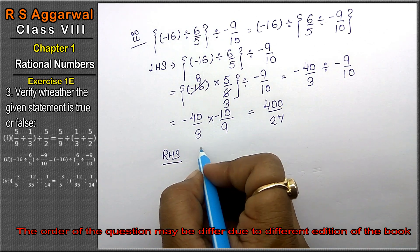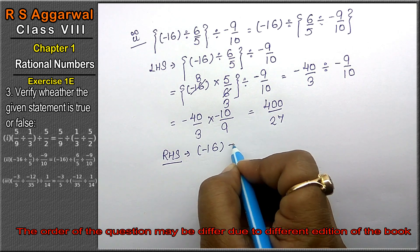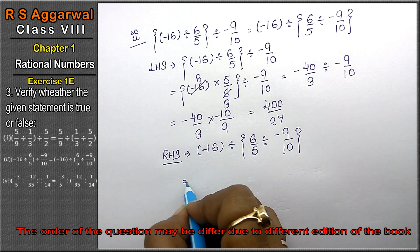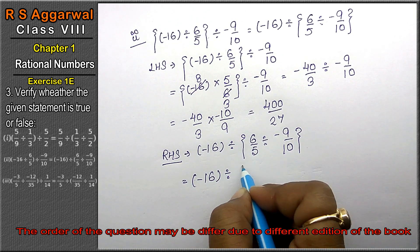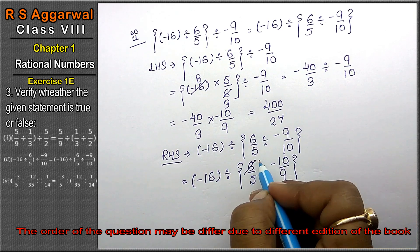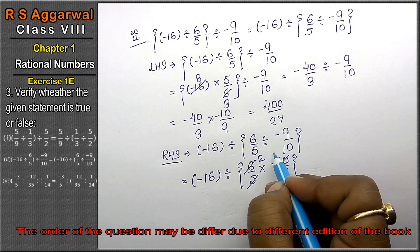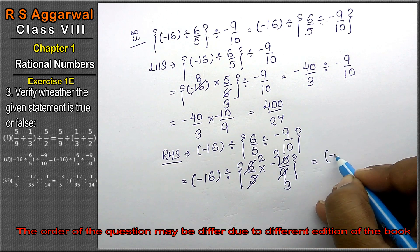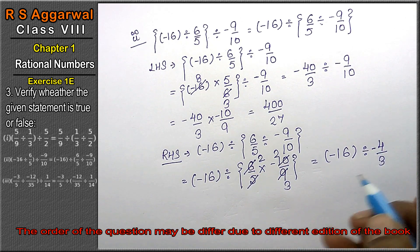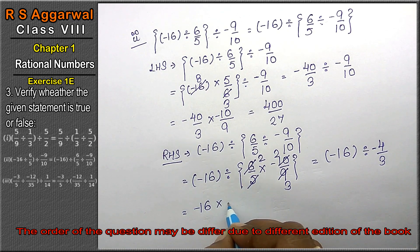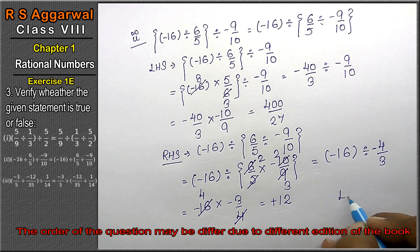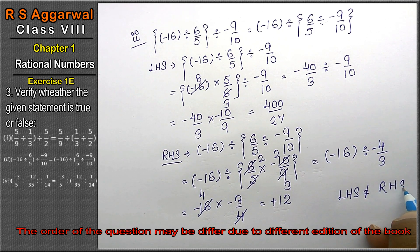Right-hand side: -16 ÷ 6/5 ÷ -9/10. This becomes -16 ÷ 6/5 multiplied by -10/9. Simplifying: 3 twos are 6, 3 threes are 9, 5 twos are 10 — giving -16 divided by -4/9, then -16 multiplied by -3/4. Since 4 fours are 16, this gives positive 12. The left-hand side is not equal to the right-hand side; hence, the statement is false.